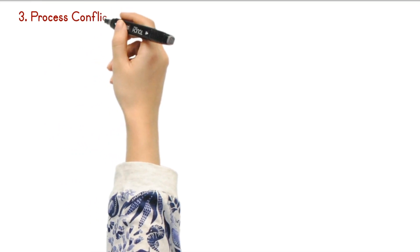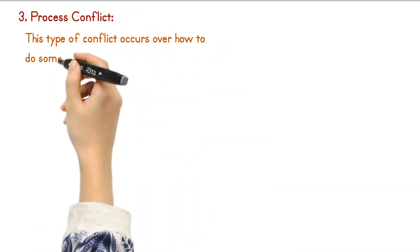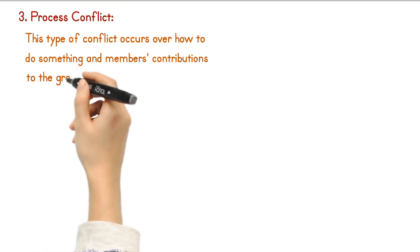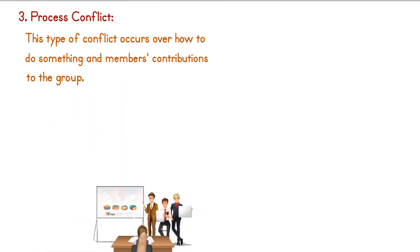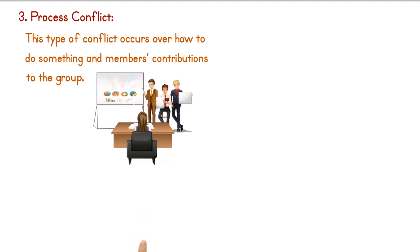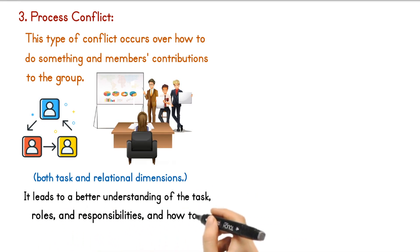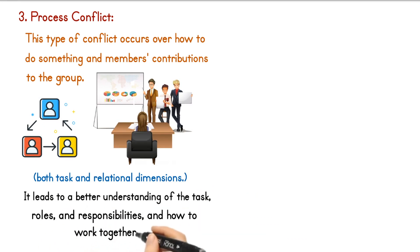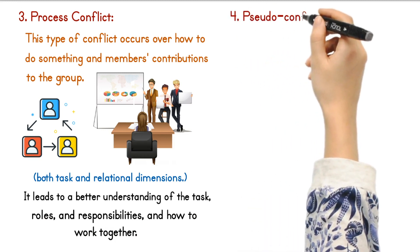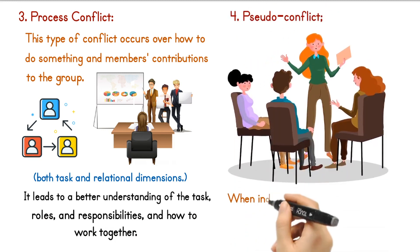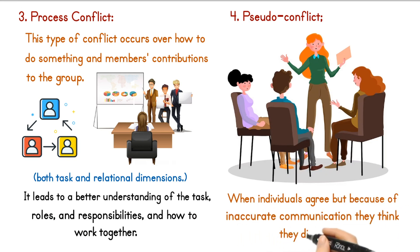Process conflict occurs over how to do something and members' contributions to the group. It deals with how the group will accomplish its work and how much group members contribute. Process conflict has both task and relational dimensions. It can be constructive when it leads to a better understanding of the task, roles, and responsibilities, and how to work together. However, it can be destructive when it hinders the group's ability to complete the work. Pseudo-conflict occurs when individuals agree but, because of inaccurate communication, they think they disagree.